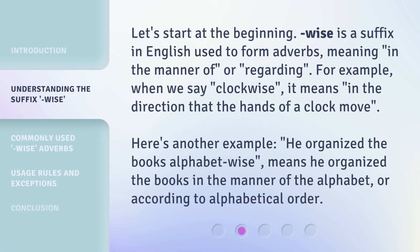Let's start at the beginning. '-Wise' is a suffix in English used to form adverbs, meaning 'in the manner of' or 'regarding'. For example, when we say 'clockwise', it means 'in the direction that the hands of a clock move'. Here's another example: 'He organized the books alphabet-wise' — meaning he organized the books in the manner of the alphabet, or according to alphabetical order.